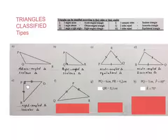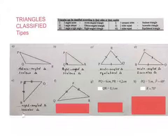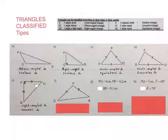This triangle is called a right angled triangle because one angle is a right angle, but it's also an isosceles triangle because of the two sides that are equal in length.